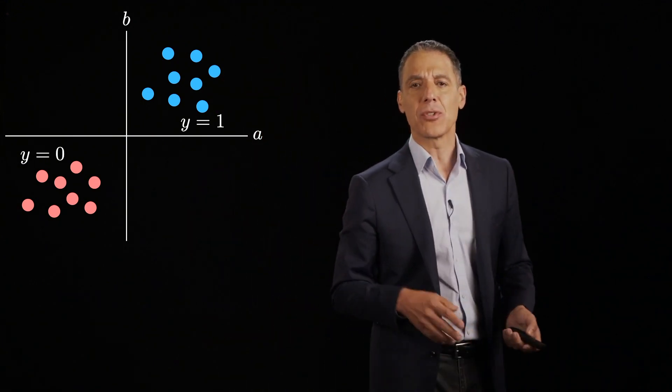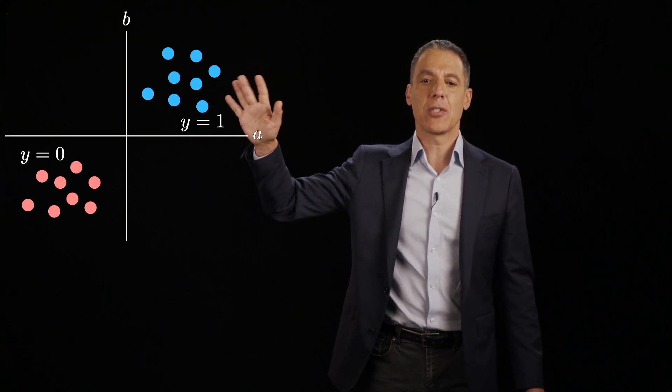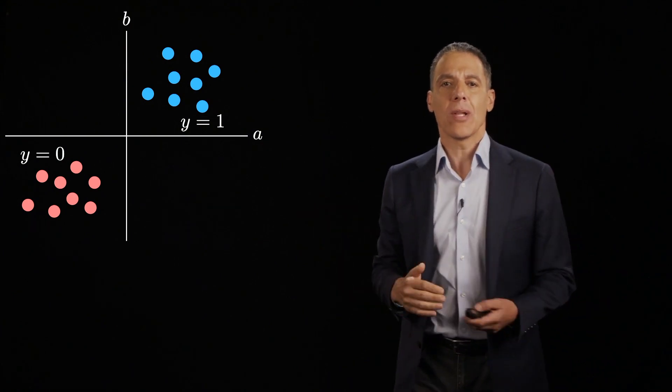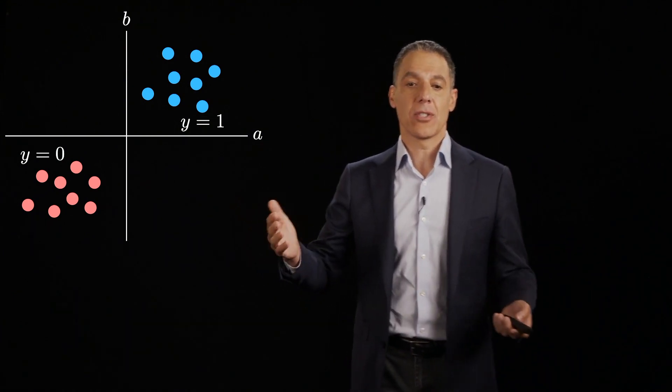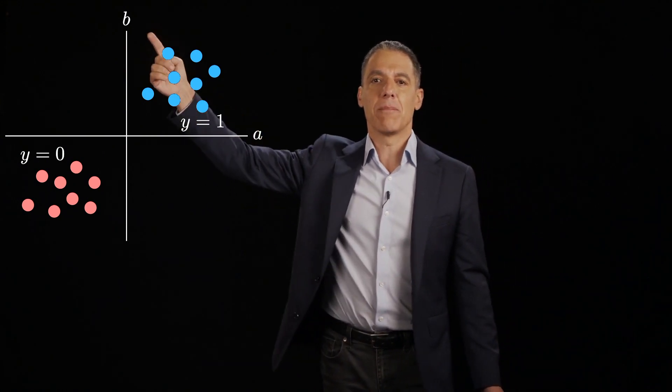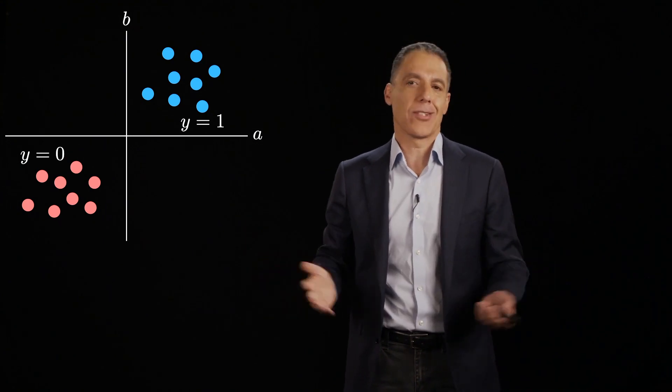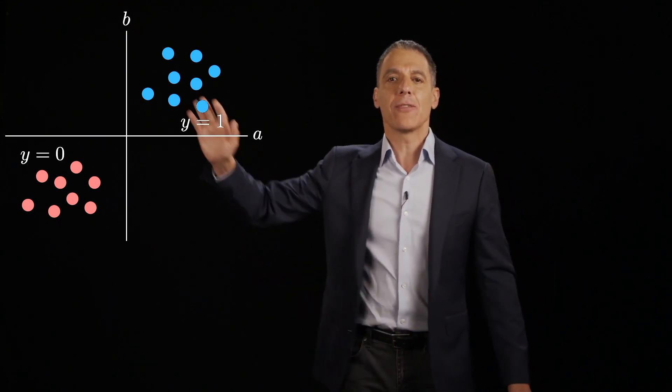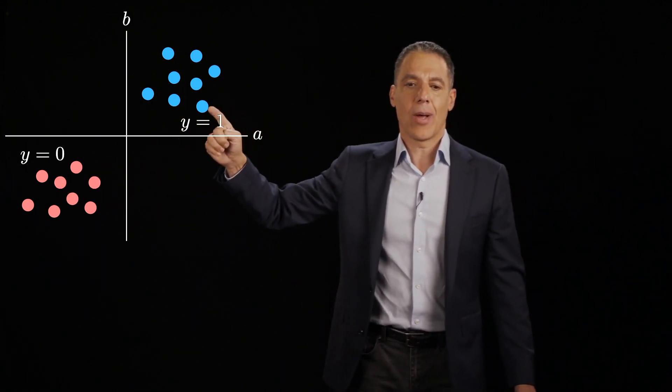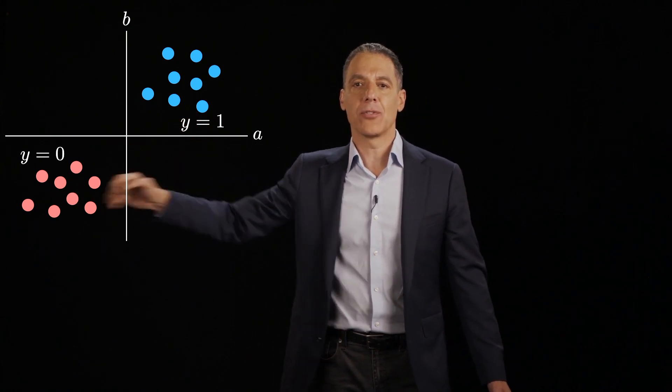So let's look at a simple toy example here where I have two classes characterized by two features, feature A and feature B. Now, what could these be? Well, let's say this is a medical diagnosis, and A is your red blood cell count and B is your white blood cell count. I know nothing about biology or medicine, but it doesn't matter. And you have two categorizations: let's say healthy and unhealthy. So I'll have the output here be Y equals 1 for healthy and the output here Y equals 0 for unhealthy.